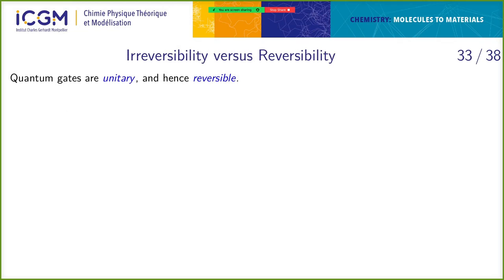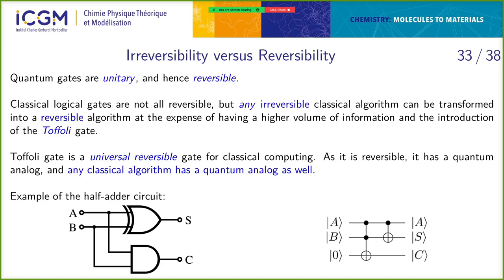I'll just finish a bit about the first lecture. The main difference between classical and quantum computing is that all quantum operations are unitary to preserve the norm of the physical state, and they are therefore reversible. Any gate you apply should be reversible, any algorithm you apply should be reversible. This is not the case in classical computing, because classical computing can copy things and operations are normally not reversible.